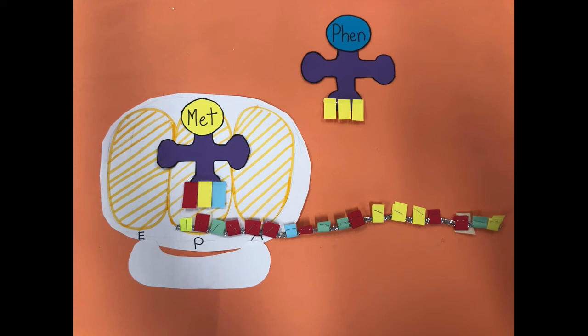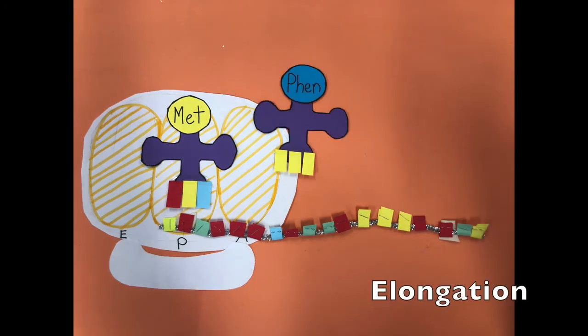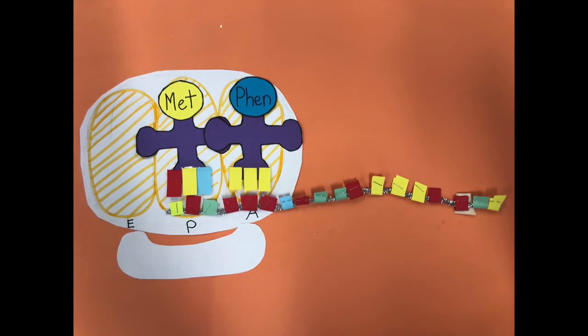The following tRNA binds to the A-site. Once the second amino acid is in the A-site, a peptide bond is formed between the two amino acids, gradually forming a polypeptide chain.